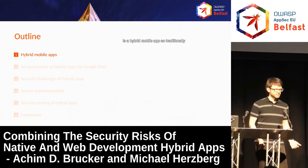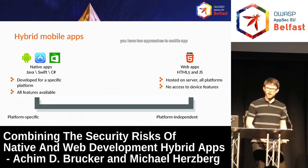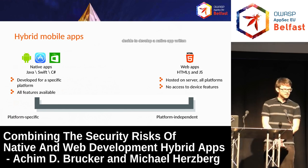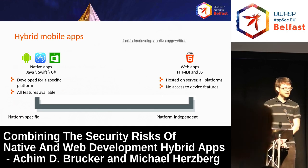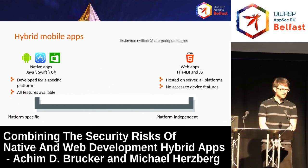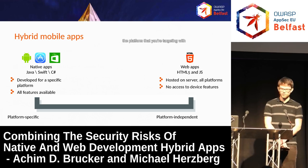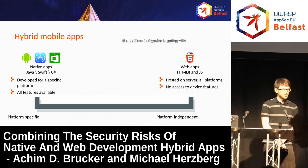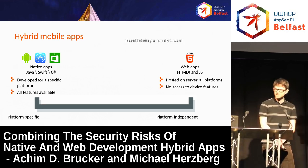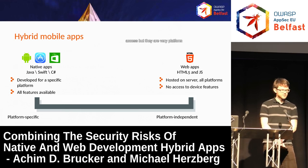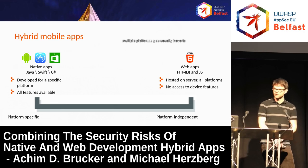What is a hybrid mobile app? Traditionally, you have two approaches to mobile app development. On the one hand, you can decide to develop a native app written in Java, Swift, or C-Sharp, depending on the platform you're targeting. With these kinds of apps, you usually have all features available that the platform provides, such as GPS or camera access, but they are very platform-specific. If you want to target multiple platforms, you usually have to redevelop all of them.